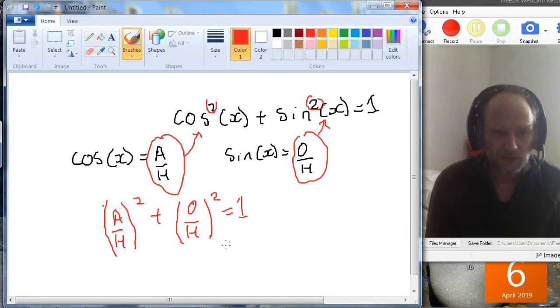So we can write that out again as a² over h² plus o² over h² is equal to 1. And now what we're going to do is multiply both sides of this equation by h².